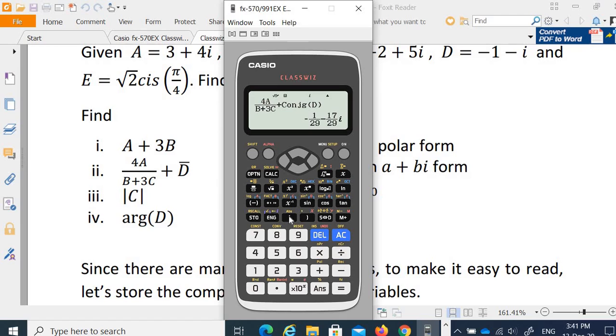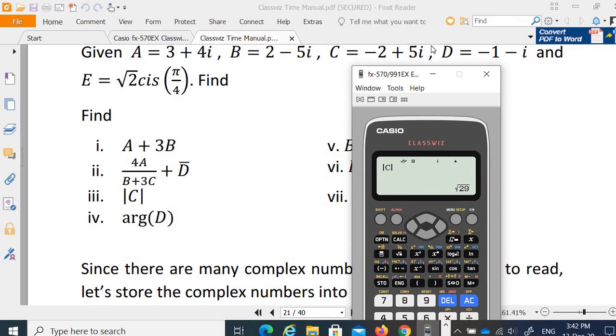And then if you want to find the absolute value of C, you will see you have the abs here. Abs will shift to the absolute value of C. So alpha C. The value here is actually equivalent to the square root of negative 2 squared plus 1 squared. So √5. This is correct. So argument just now we have shown, it will find the angle of the complex number.